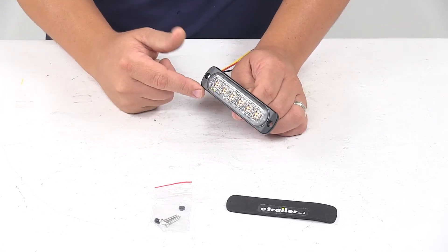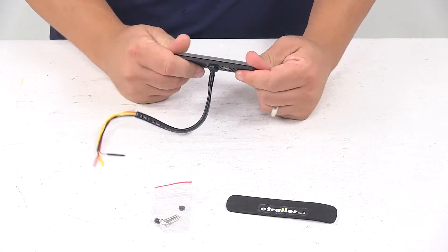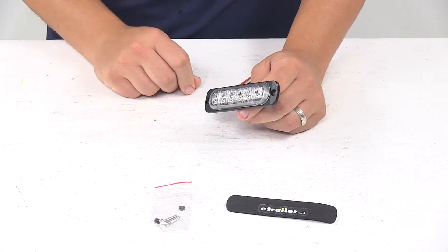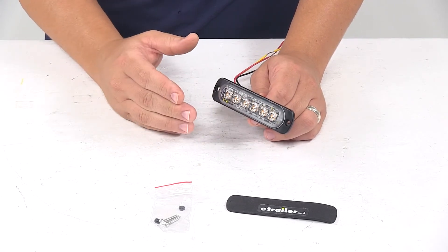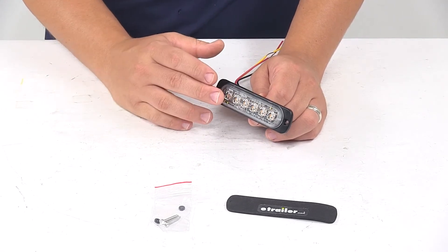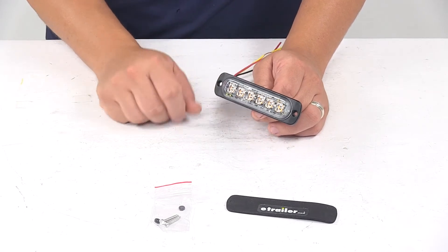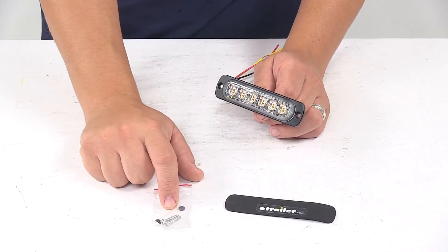It has a really nice black housing made from durable aluminum construction. The clear lens lets plenty of light come through. Features amber LEDs. It's a surface mount installation. Foam mounting gasket and hardware are included.